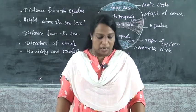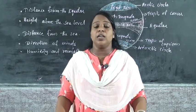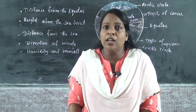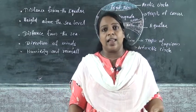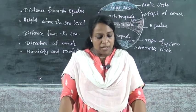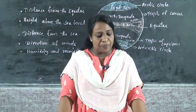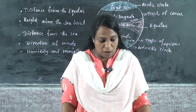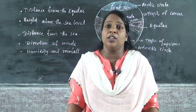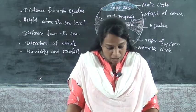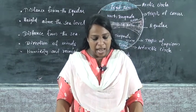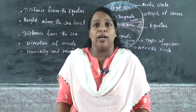The third point is distance from the sea. How does distance from the sea influence the climate? Sea breeze is air that blows from the sea to the land and makes the land cooler.